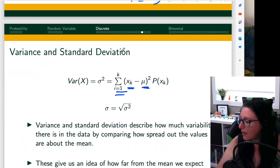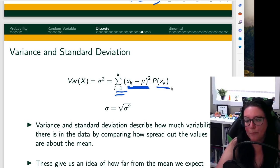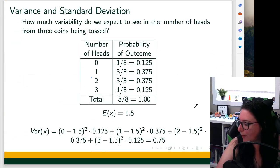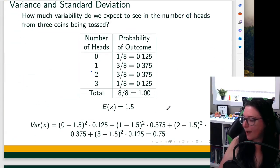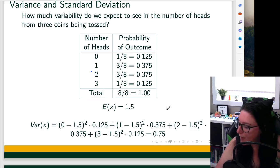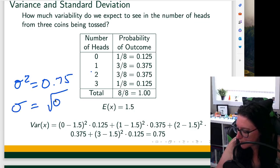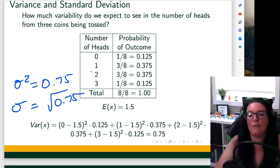So when you look at the formula here, distance between the two, square them, multiply times the probability, and then add them all up when you're done. If you take the square root of that, we get a variance here of 0.75. So sigma squared is 0.75, and the standard deviation then is the square root of 0.75.